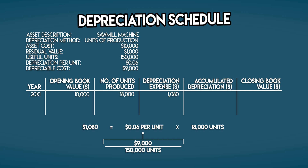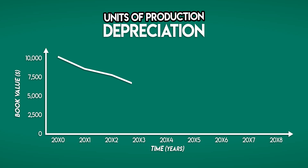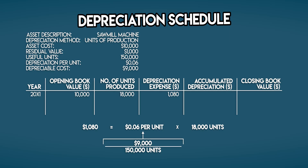This is the amount of your sawmill machine that you'll write off to your income statement. Your depreciation per unit is constant, but your number of units produced will change each year, so your depreciation expense under the units of production method is a variable cost to your income statement — it mirrors your actual physical use of the asset. Accumulated depreciation is the cumulative total of all depreciation expenses incurred; in your first accounting period it matches your depreciation expense. Your closing book value is $10,000 minus $1,080, which is $8,920.